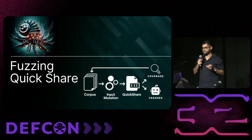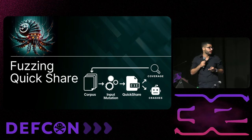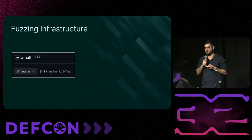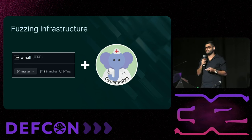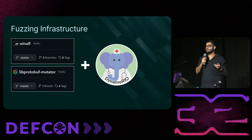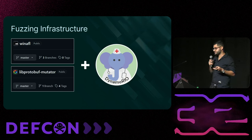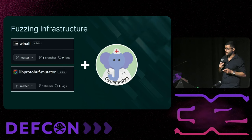Now that we have a basic understanding of how QuickShare file transfer works under the hood, we can proceed to fuzz this flow. For QuickShare for Windows we chose WinAFL as our fuzzing infrastructure. For instrumentation we use DynamoRIO, and since protobuf is used everywhere we wanted a solution that supports protobuf as well — Google developed libprotobuf-mutator that can be used with WinAFL. Combining these solutions helped us a lot in the fuzzing process.